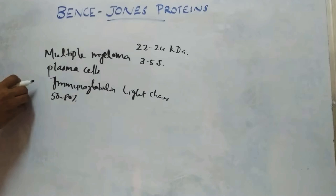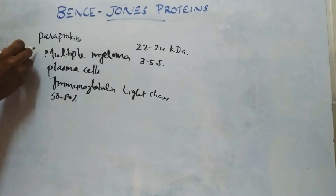Benz-Jones proteins are immunoglobulin light chains or paraproteins. These are produced by neoplastic plasma cells.